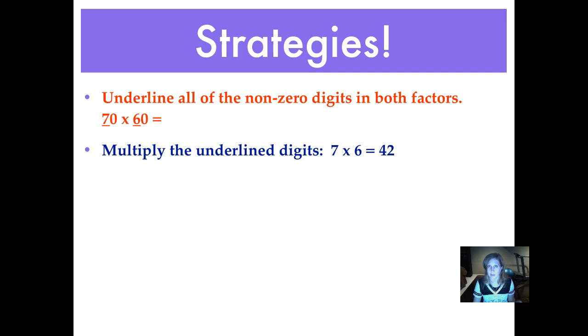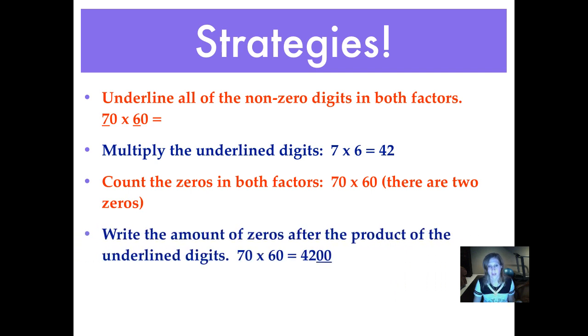Next, you multiply those underlying digits. So 7 times 6 equals 42. Then you count the zeros in both factors. There's a zero in 70 and a zero in 60, so there are two zeros in all. Now write the amount of zeros after the product of the underlying digits. So 70 times 60 equals 4,200.